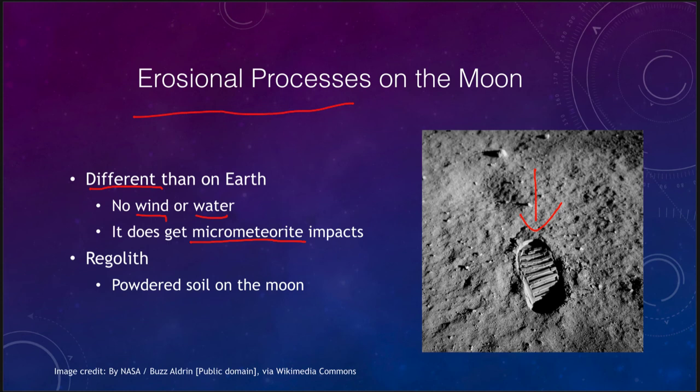The astronauts' footprints will eventually wear away, but it can take millions or tens of millions of years for micrometeorites to slowly repulverize that material and churn it up. If we go back to the moon in the next few hundred years, we will still see the astronauts' footprints much as they were left in the 1960s and 1970s.